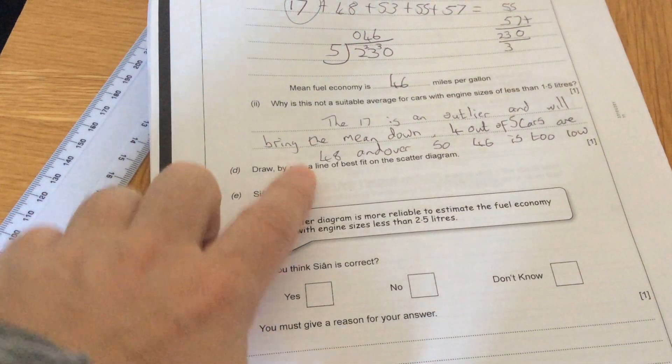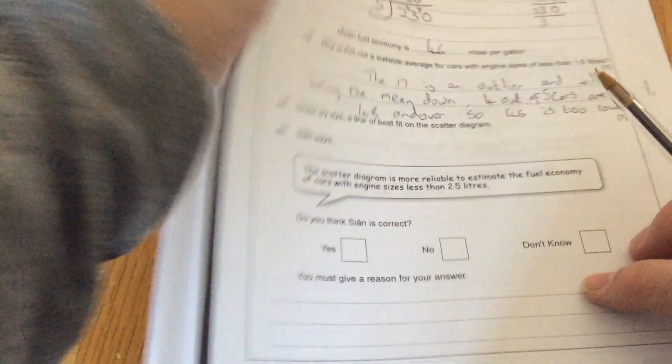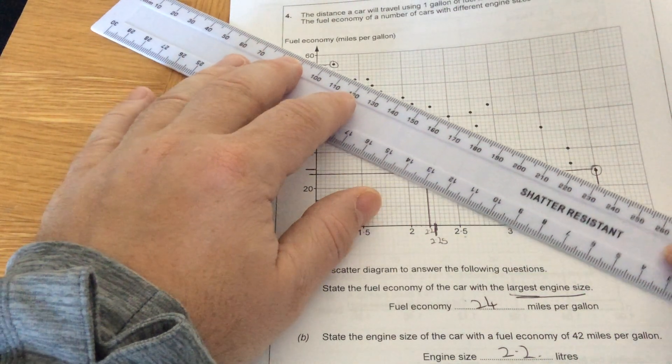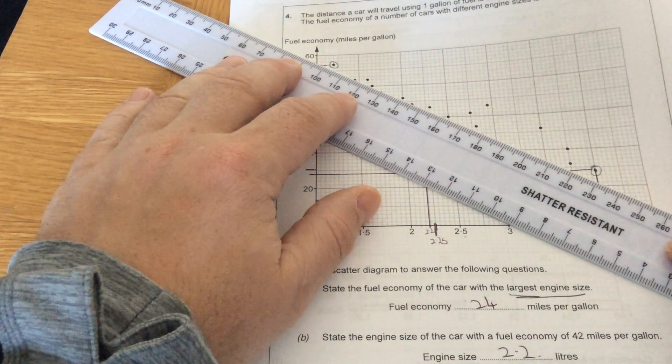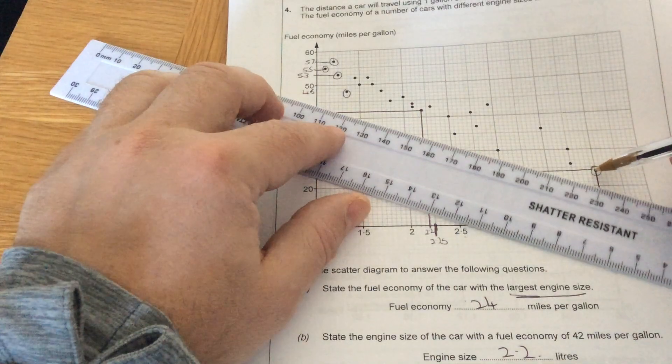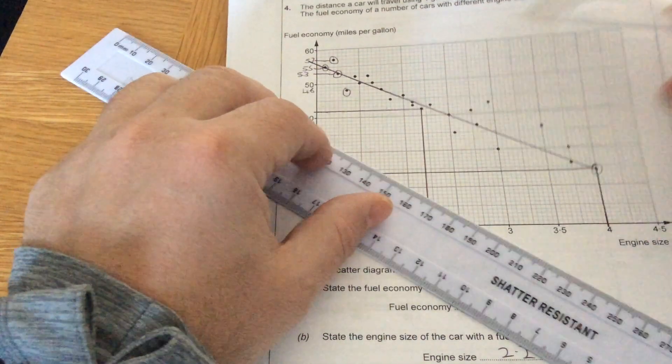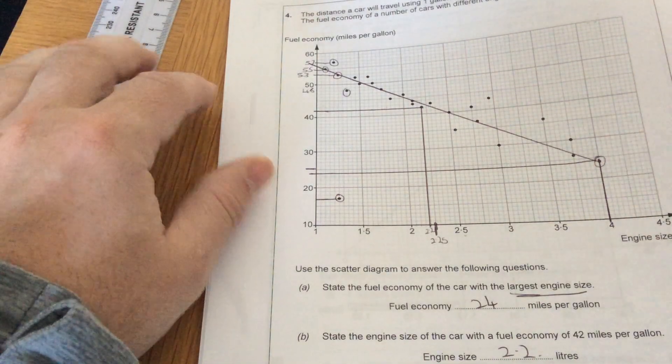Draw by eye a line of best fit. So a line of best fit must be done with a ruler, going through roughly the middle of the points. It doesn't have to start at zero. So if I'm looking at this one, I would probably say it's going to go up through there. That would have roughly the same number of points above the line and below.